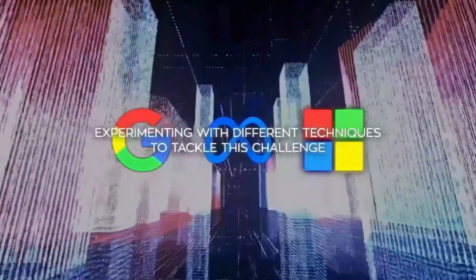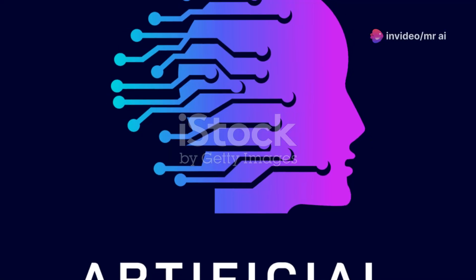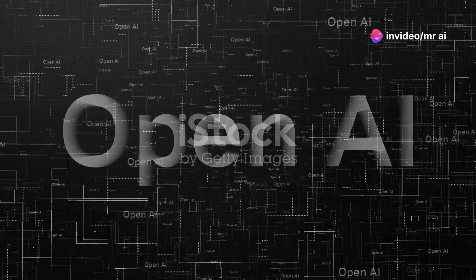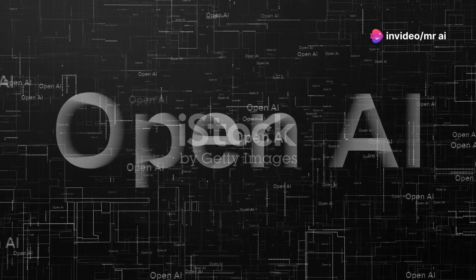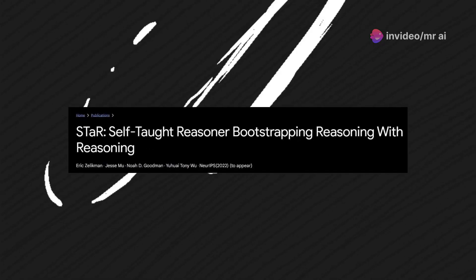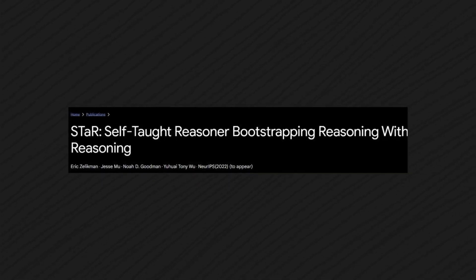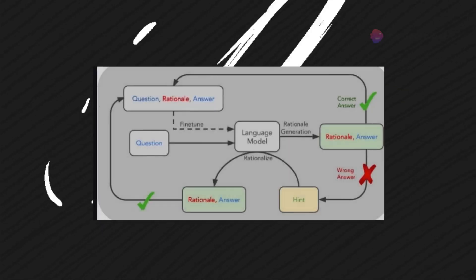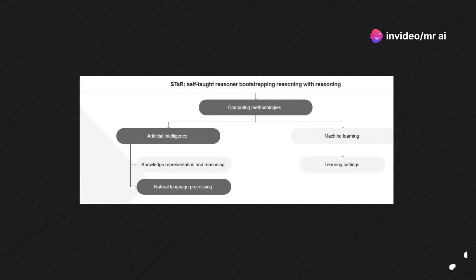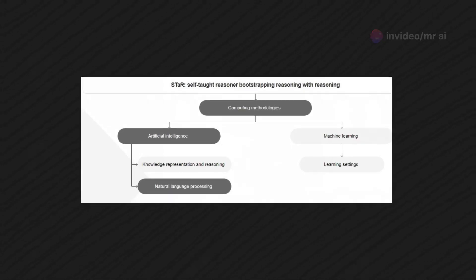However, Strawberry seems to be OpenAI's main focus for advancing AI reasoning. Interestingly, Strawberry has similarities to a method developed at Stanford called the Self-Taught Reasoner, or STAR. This method enables AI models to bootstrap themselves to higher intelligence levels by creating their own training data, potentially allowing for continuous self-improvement.